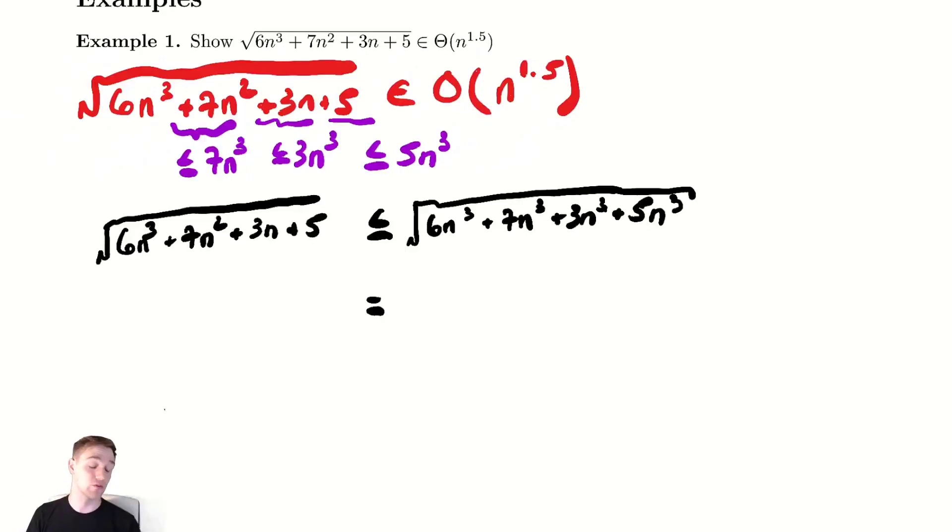That's grouped together all of our like terms. Notice I'm using an equal sign here because I'm no longer replacing things with things that are larger. The thing on the right hand side of my inequality there is in fact equal to what I will write on the next line. So this is √(6 + 7 + 3 + 5), that's going to be 21n³.